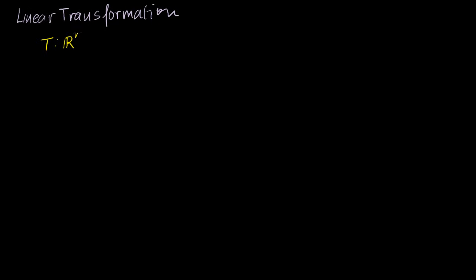You now know what a transformation is, so let's introduce a special kind of transformation called a linear transformation. It only makes sense that we have something called a linear transformation because we're studying linear algebra. We already had linear combinations, so we might as well have a linear transformation. A linear transformation, by definition, is a transformation — which we know is just a function — from Rn to Rm, where the following two things have to be true.